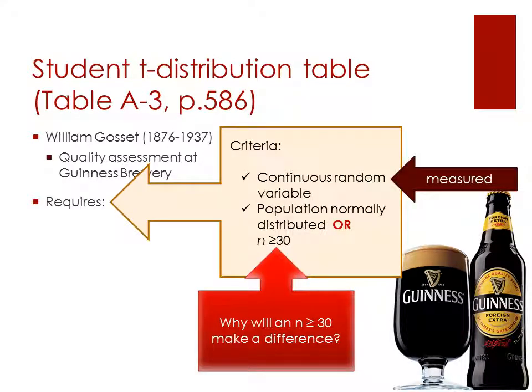Now, when we're going to use the student t-distribution table, we have a couple of criteria that we have to look at first. It needs to be a continuous random variable, something that's measured. We need to have a population that's normally distributed, or we need to have an N greater than or equal to 30.